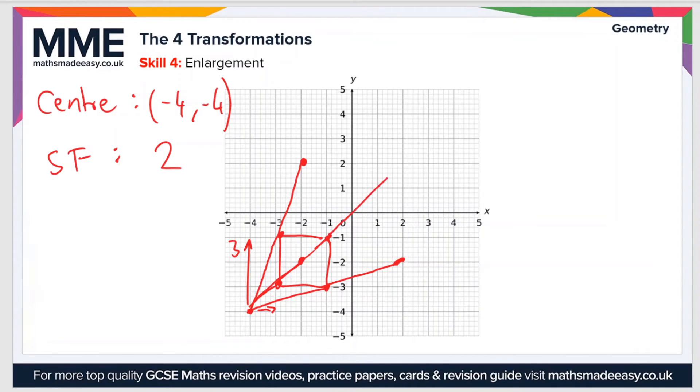So we go three across and three up and that shows us where the final point will be. If we connect the dots, we'll use a different color here. You can see that this shape has been enlarged by a scale factor of two about the point negative four, negative four.